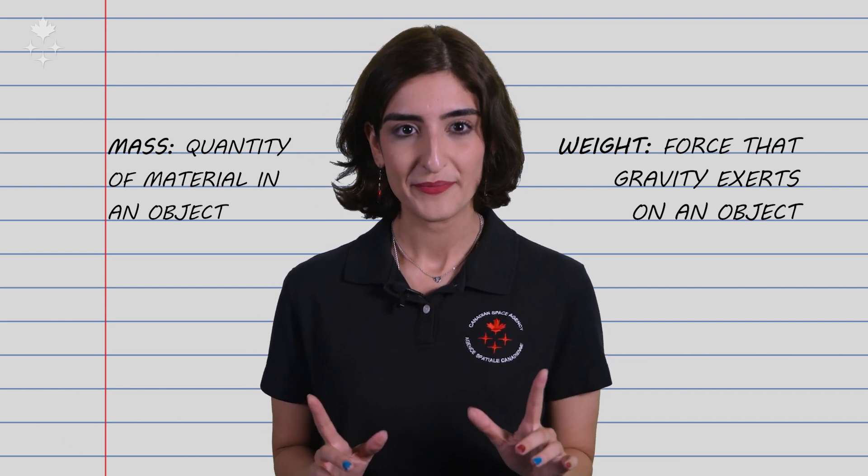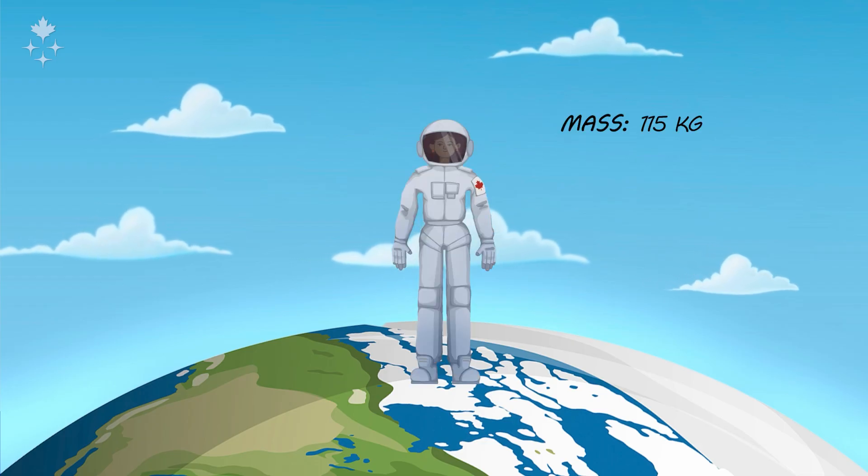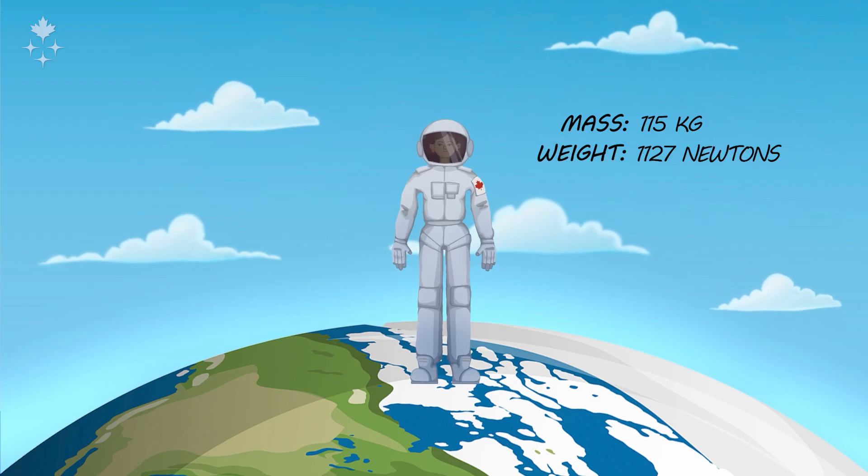Here, I'll give you an example. Take an astronaut on Earth. Let's say that they have a mass of 115 kilograms when they are wearing their bulky spacesuits. If they try to jump, it will be very hard to do because of their weight.